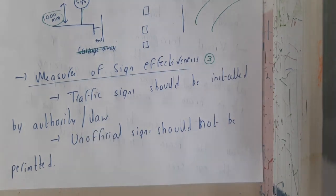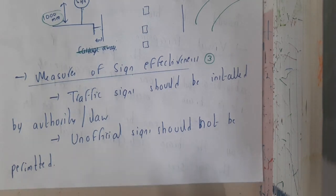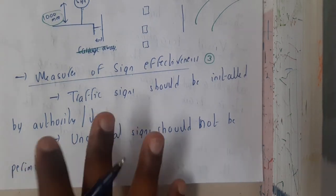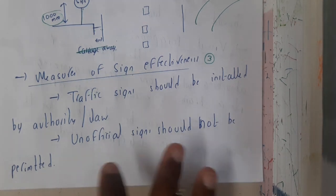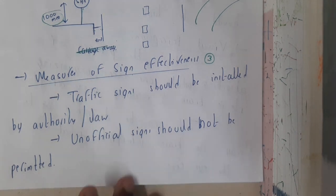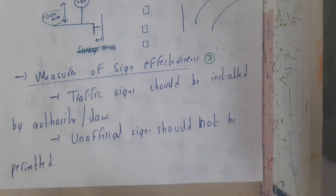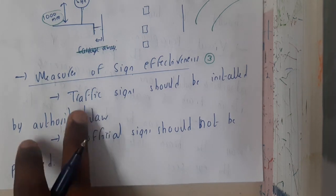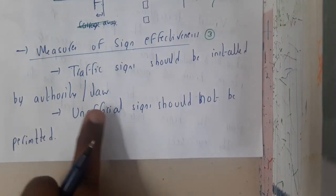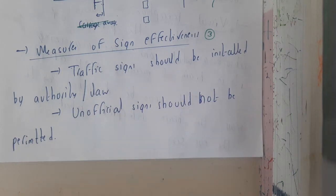Traffic signs should be installed by the government or by the authorities or by the law. Only with their permission you need to place these signs. There is no requirement that you can place them near your house just because it's your property. You can place a no parking sign, that's fine, but not any other signs. Speed limit signs or speed breaker signs should not be kept without permission of the government or authorities.